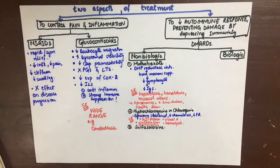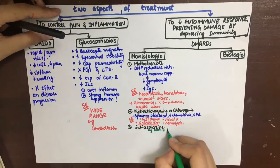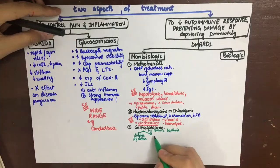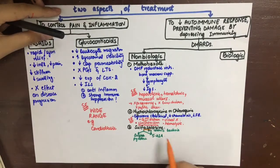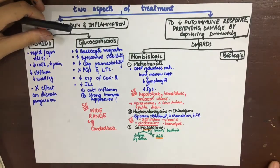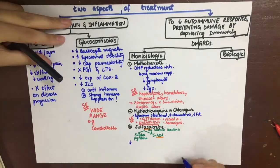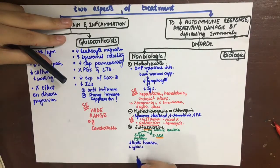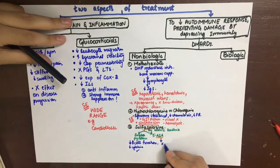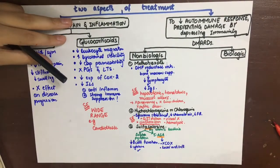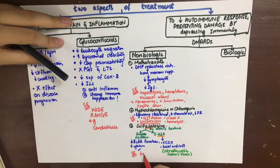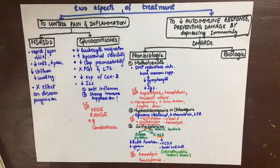The next drug is sulfasalazine. It is acted upon by colonic bacteria, which split it into two active compounds: sulfapyridine and 5-ASA (acetylsalicylic acid). Sulfapyridine inhibits B-cell function and production of inflammatory cytokines; interleukins and TNF by monocytes are decreased. The 5-ASA component, like aspirin, inhibits COX and has local anti-inflammatory action as in ulcerative colitis and Crohn's disease. Side effects include hemolysis and leukopenia.